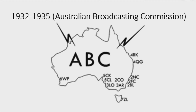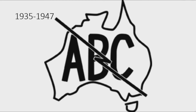1932 to 1935: there is a white Australia on a black outline, and above it there are two bolts of lightning on the silhouette of Australia. Surrounding Australia there are the codes RK, 4QG, 2NC, 2FC, 2BL, 7ZL, 3LO, 2CO, 5CL, 5CK, and 6WF, all in black text.